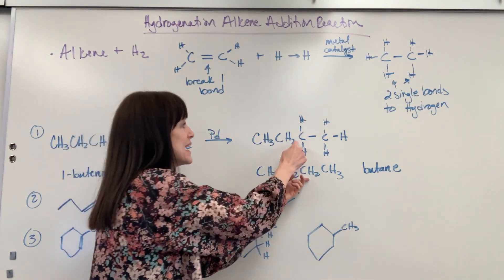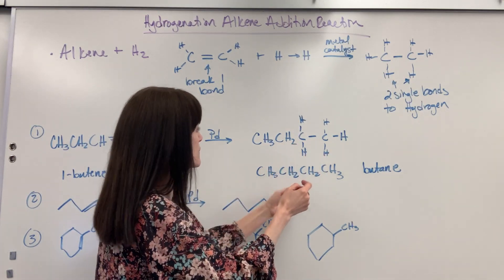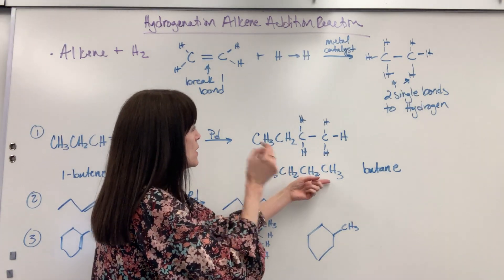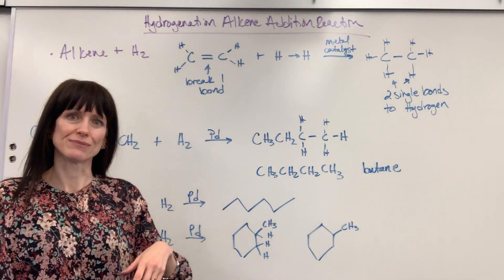So how we would write this in our condensed form, it would just become butane. CH3, CH2, CH2, right there, there's my CH2. One, two, three, four. CH2, and then my CH3. Right in between there, we added a hydrogen, we added a hydrogen.